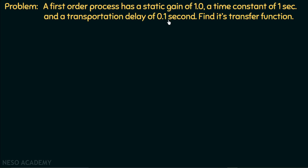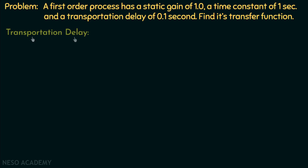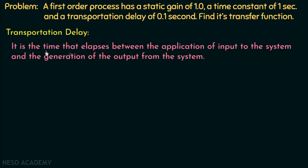We have already discussed static gain and time constant of a system, but now we have a new term: transportation delay. Transportation delay is the time that elapses between the application of input to the system and the generation of output from the system. It is similar to the propagation delay we study in digital circuits like flip-flops and counters.